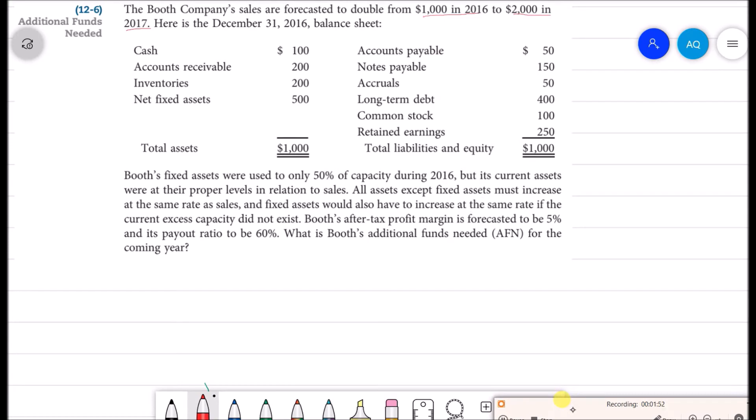All the assets except fixed assets must increase at the same rate as sales. So if the sales are getting double, then we will need double cash, double accounts receivable, and double inventories.